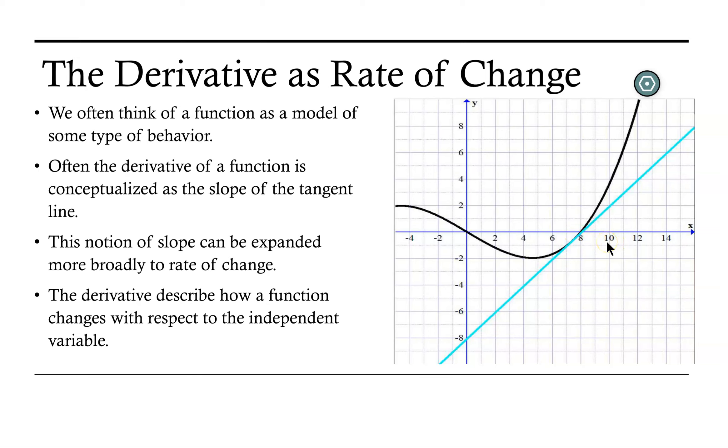whereas for x values greater than 8, the function values are above the x-axis and thus positive. So a function is a model of some type of behavior.